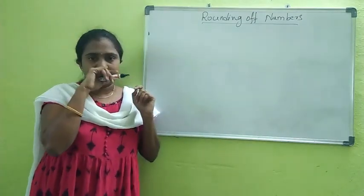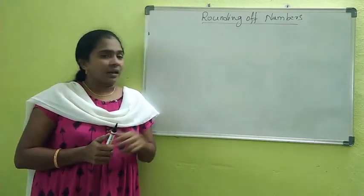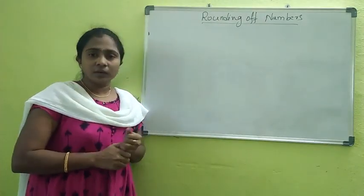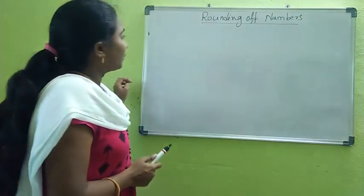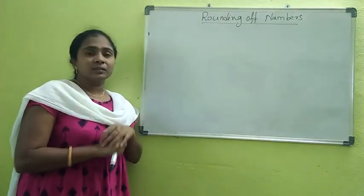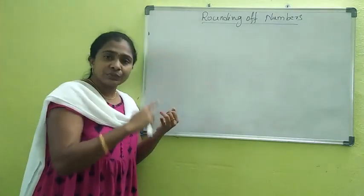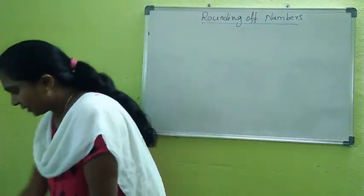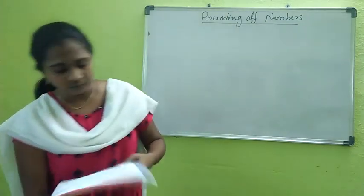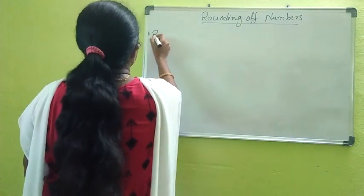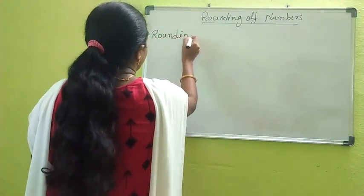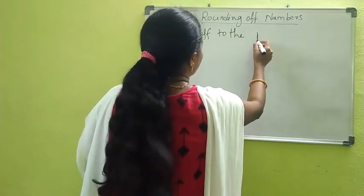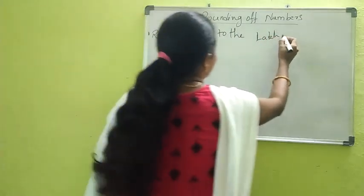Now we will start the concept — rounding of numbers. This is not a new concept; you are already familiar with it from the previous class, that is your fourth class. In fourth class you learned rounding off to the nearest ten, hundred, and thousand. Now in this class you will learn rounding off to the lakhs place.